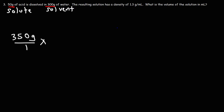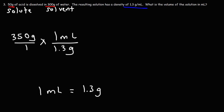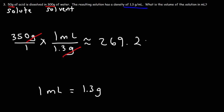Now we're going to use the density to convert from grams to milliliters. A density of 1.3 grams per milliliter means that a volume of one milliliter has a mass of 1.3 grams. So we're going to put 1.3 grams on the bottom and one milliliter on top. We can see that the units grams will cancel. Now we'll need to divide: 350 divided by 1.3 is approximately 269.2 milliliters. So that's how you can convert from grams to milliliters using density and vice versa.